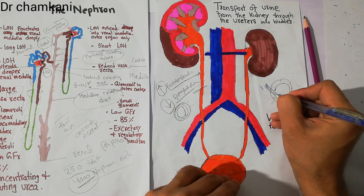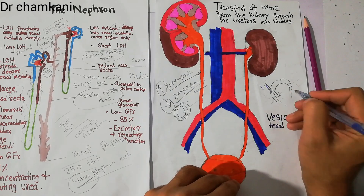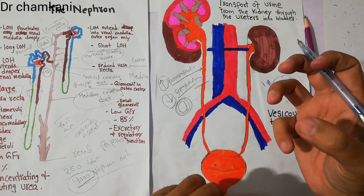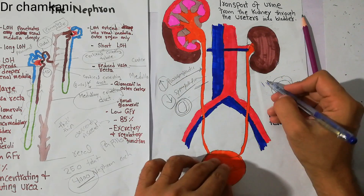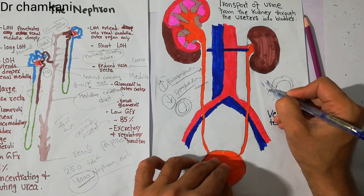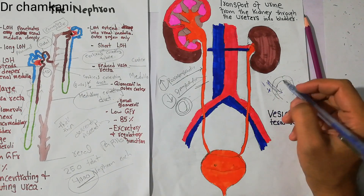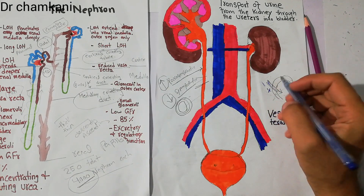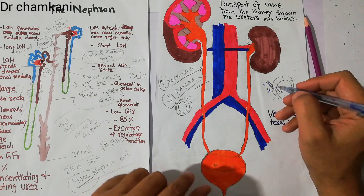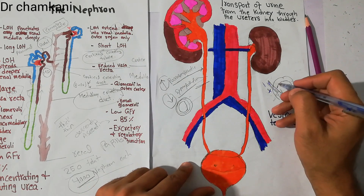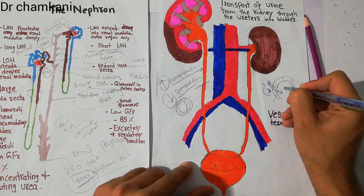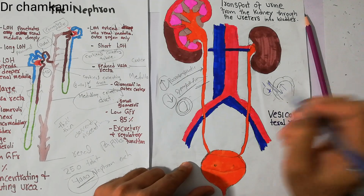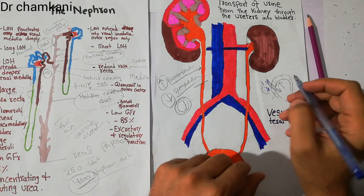Urine can pass from the ureter into the bladder. But when the bladder contracts, this area basically closes, and this area acts as a valve — it prevents the passage of urine from the bladder into the ureter.